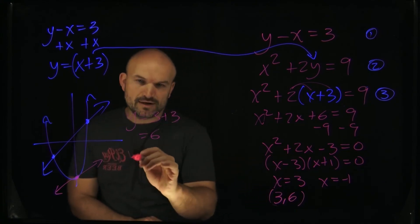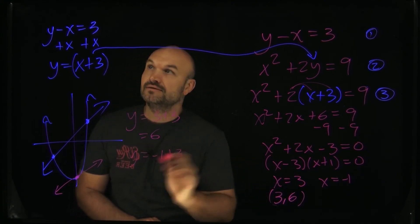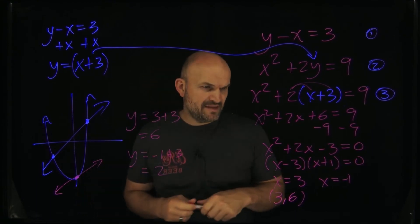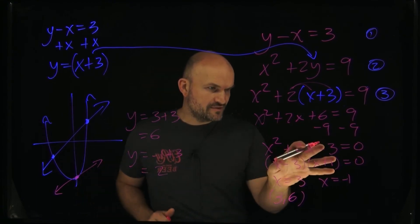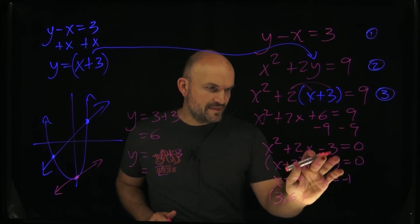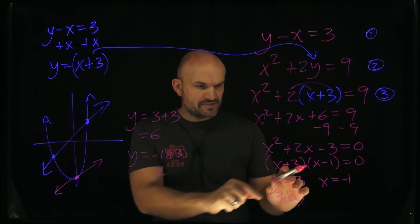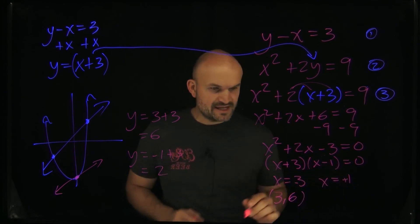And what about when x equals negative 1? y equals negative 1 plus 3, right? And then, so therefore, that's going to equal a, oh wait, I made a mistake here. So this is actually factored wrong. So that actually should be a positive 3, and this should be a negative 1, right? Because that's going to be negative 3.